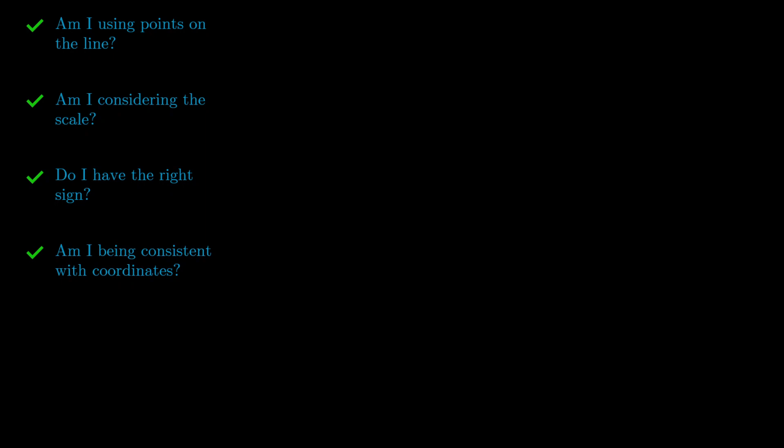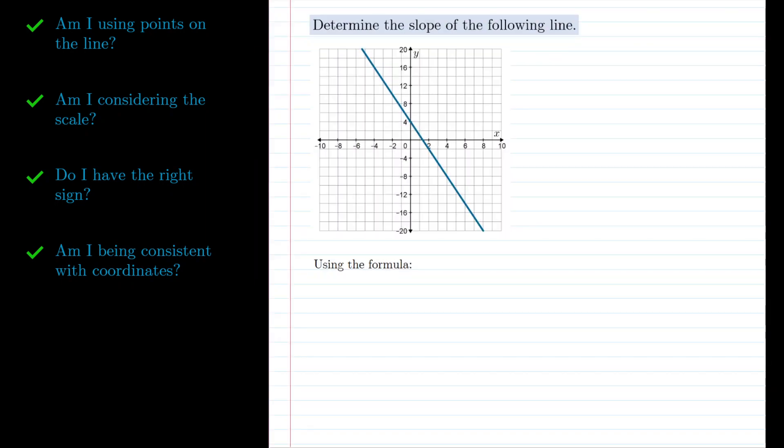To see how these problems can creep up in a solution, let's take a look at a specific example. Here we're given the graph of a straight line and we're asked to find the slope of that line. We can do this using a couple of different methods. We can use just the graph or we can use the slope formula. Let's start by looking just at the graph.